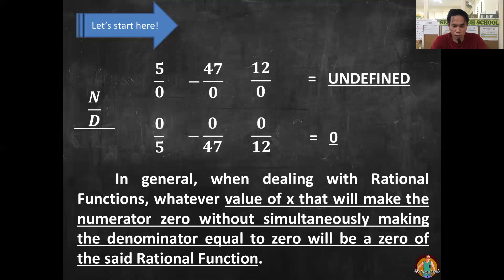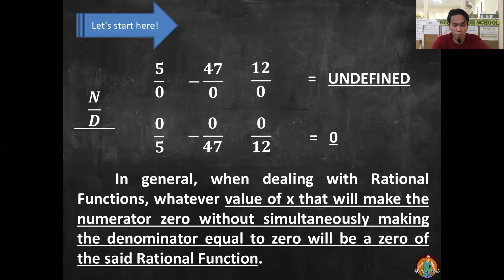Again, when the value of x makes the numerator 0 but the denominator is not 0, that is the zero of a rational function. The value of x that makes the numerator 0 without making the denominator 0 is the zero of a rational function. So again, let's have an example.